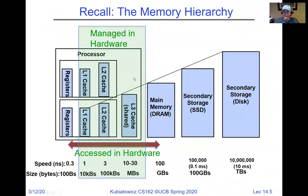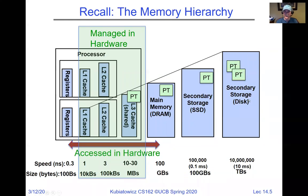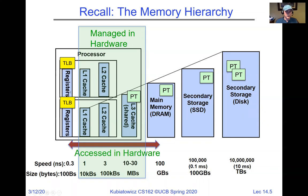This is the extended memory hierarchy: big things on the right are slow, small things on the left are fast — that's physics. If we do caching well, we get access times with the speed of the small things but the size of the large things. The new addition is that page tables are actually in memory — possibly on disk, in main memory, or in cache levels. We put the TLB near register speed to make address translation faster.